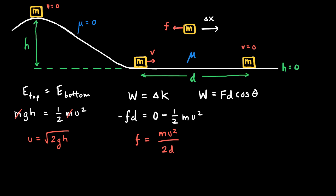I'd like to analyze this further by substituting the expression for velocity into the expression for the friction force. So I'll write f equals m times v², but instead of v² I'll plug in (√(2gh))² which is just 2gh, divided by 2d. This simplifies — the 2's cancel — to mgh/d.